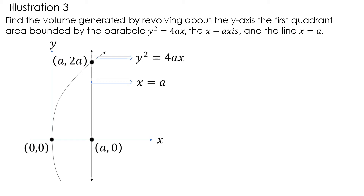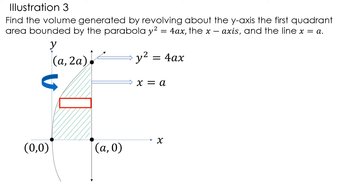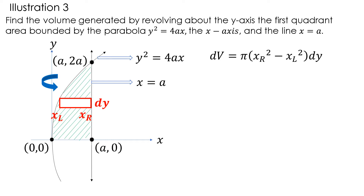If we wanted to revolve this first quadrant area about the y-axis, we can solve the solid of revolution generated by introducing a horizontal element whose thickness is dy, and whose xr is the outer radius and xl is the inner radius. If this horizontal element is perpendicular and does not touch the axis of revolution, it will generate a circular ring. The differential volume of the circular ring is π times (xr² minus xl²) times dy.